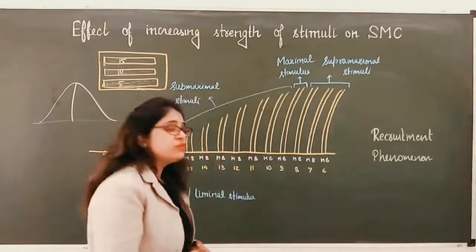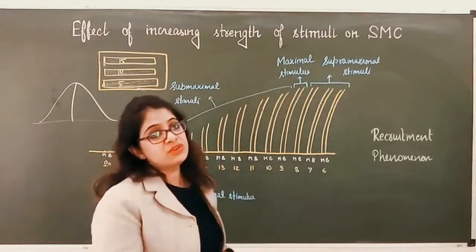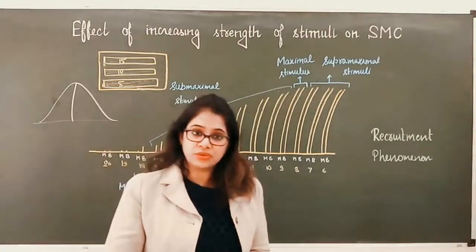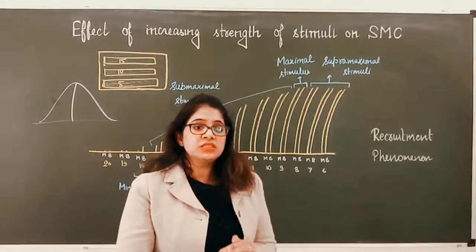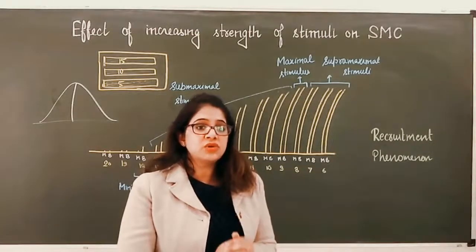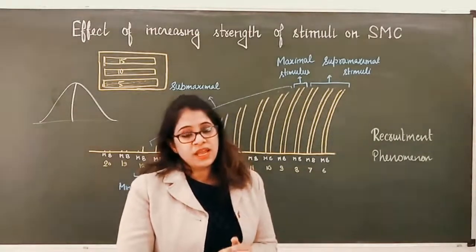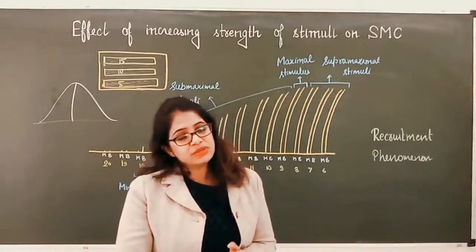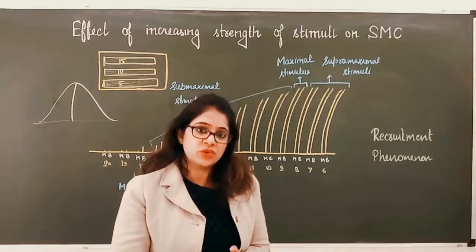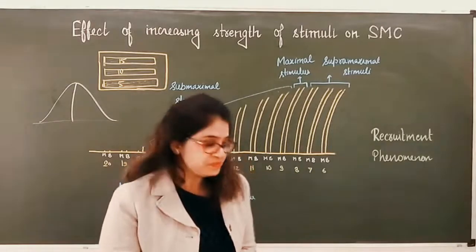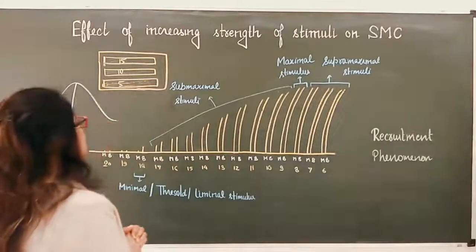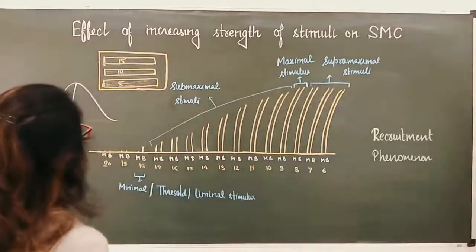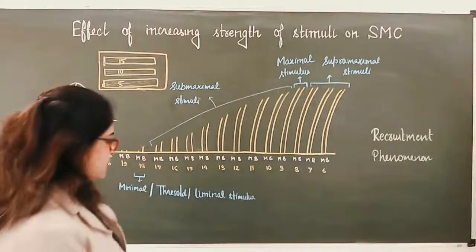Your examiner may also ask: what is a motor unit? A motor unit is a single motor neuron and all the muscle fibers supplied by it — together they constitute one motor unit. That is all about these graphs.